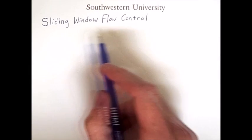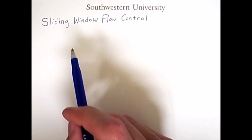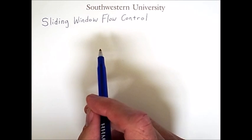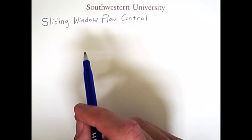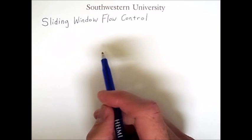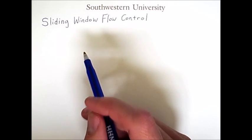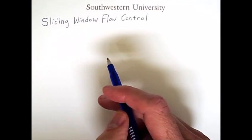This video is about sliding window flow control. A big problem with stop and wait flow control is that it has poor link utilization. In other words, there's lots of times when the communication line is dormant. Sliding window flow control improves upon this by sending several frames between acknowledgements from the receiver.